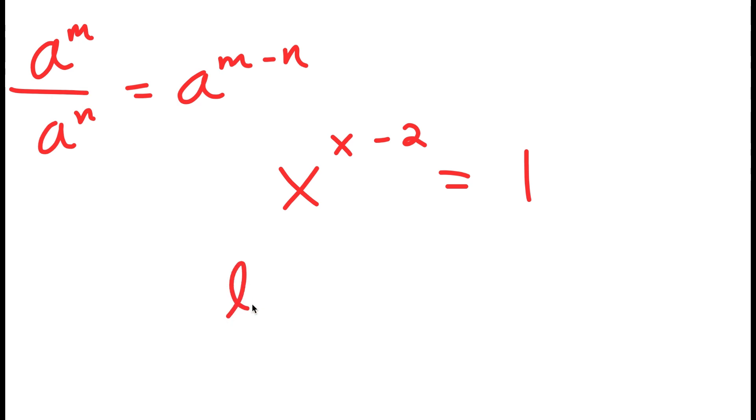Now, I'm going to take the ln, or natural log, on both sides, so I get ln x to the power of x minus 2 is equal to ln 1.